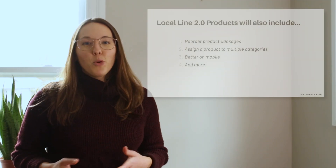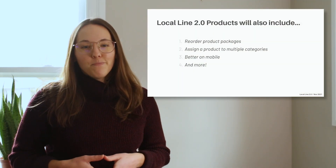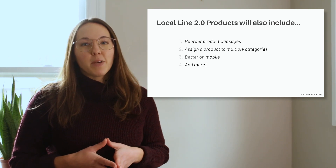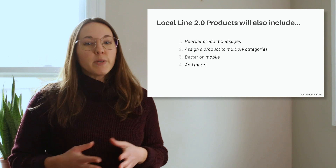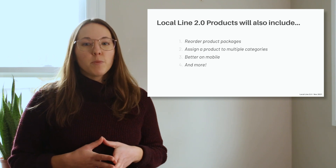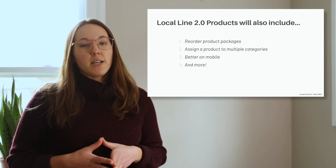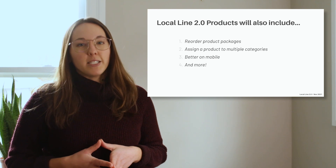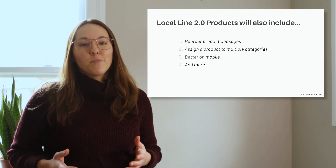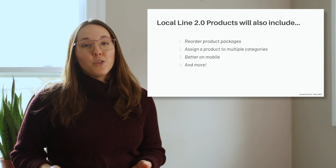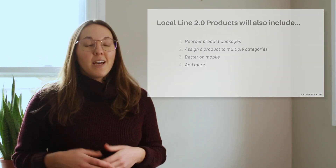And finally, a few more points to wrap up. You'll be able to reorder your product packages to customize how they are displayed on your storefront. You can also assign a product to multiple categories on multiple price lists to ensure your products are easily findable in different contexts. And there you have it — LocalLine 2.0 products with helpful new features, refined workflows, and it's better on mobile as well. We're excited for you to check it out.